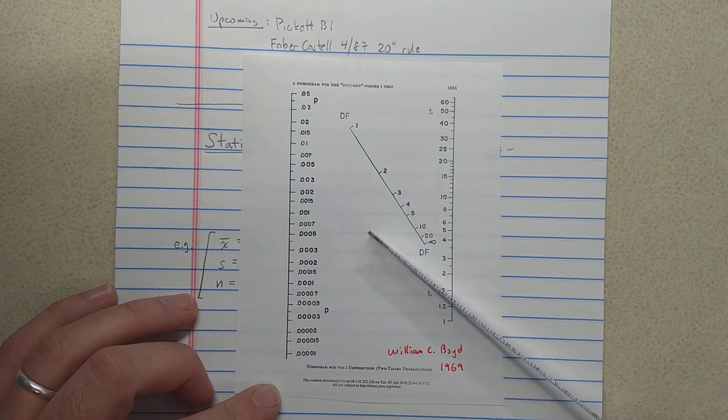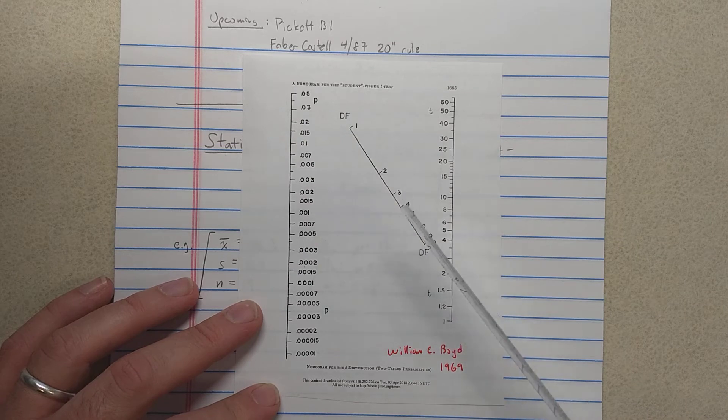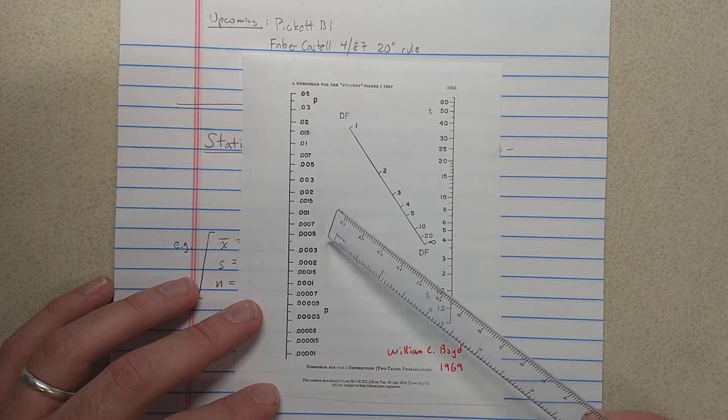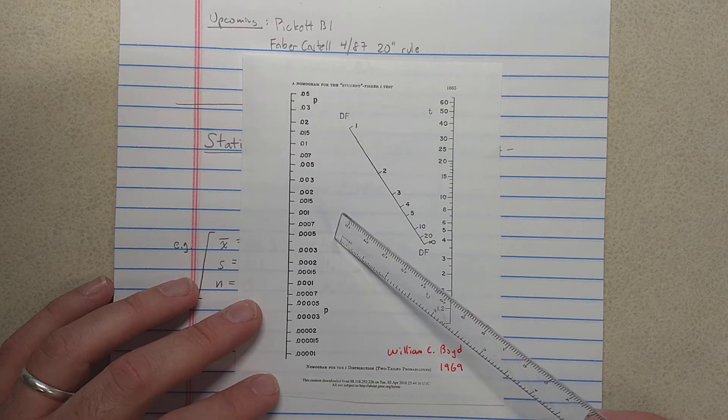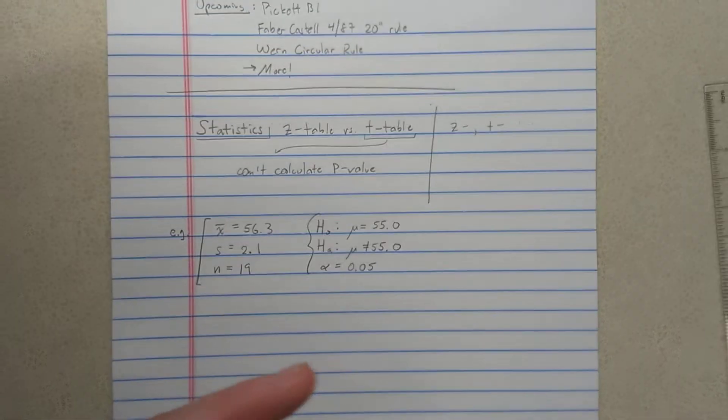The problem with this is that the problem is not really well suited to a nomogram. And what you'll find is that the probabilities that you'll get out of his chart here are fairly far off sometimes.